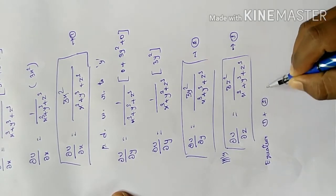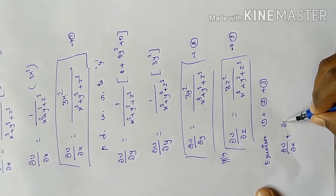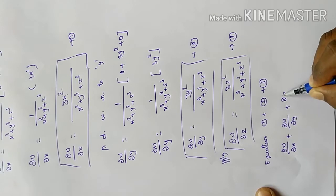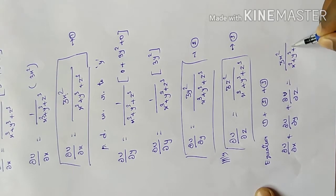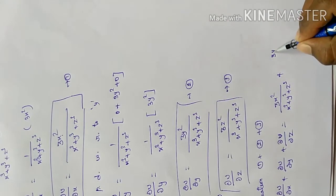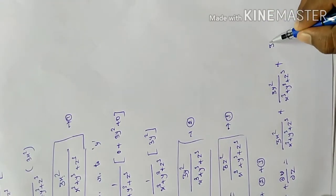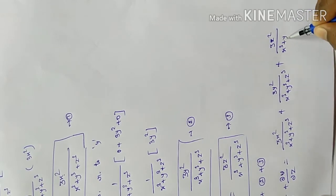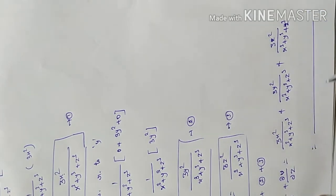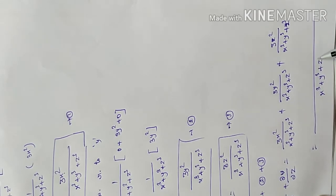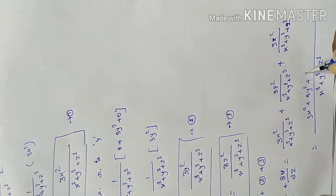Adding equations 1 plus 2 plus 3, the first reference value: ∂u/∂x plus ∂u/∂y plus ∂u/∂z equals 3x squared by (x power 3 plus y power 3 plus z power 3) plus 3y squared divided by (x power 3 plus y power 3 plus z power 3) plus 3z squared divided by (x power 3 plus y power 3 plus z power 3). Taking the common denominator x cubed plus y cubed plus z cubed, the numerator becomes 3x squared plus 3y squared plus 3z squared.